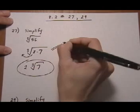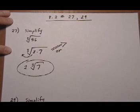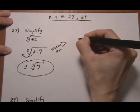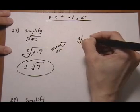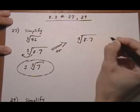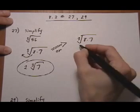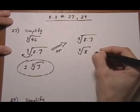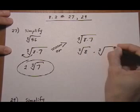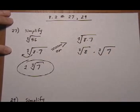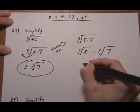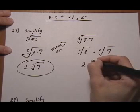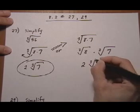We could also write it out with separate radicals if that's easier to see. So let's take cube root of 8 times 7 and break it up into the two separate radicals, cube root of 8 times cube root of 7. That's the same property we were using for square roots. Cube root of 8 is 2 and can't do anything to cube root of 7.